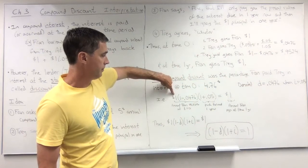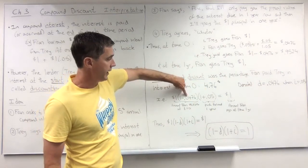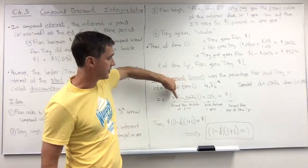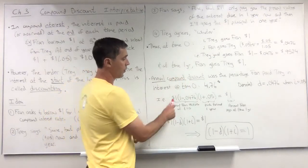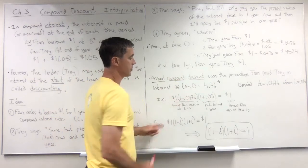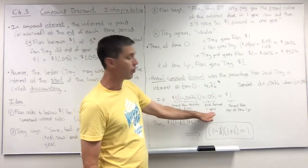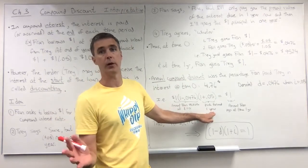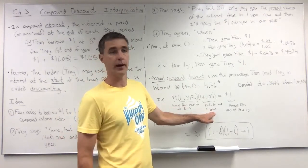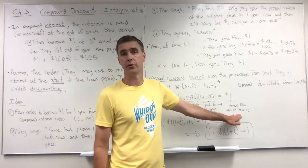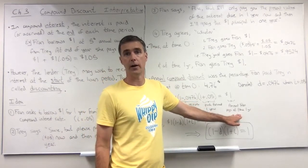Well, if we took the one dollar principal, Trey grabbed four point seven six percent of it back immediately for himself. So Fran actually got the one dollar times one minus point oh four seven six at time zero, and then this money got pushed forward one year, which we know how to do: one plus the interest rate I, in this case point oh five. And that turned out to equal that initial principal borrowed of one dollar.